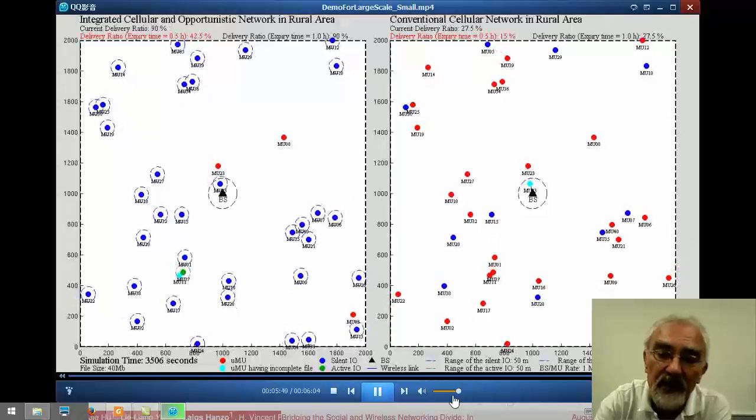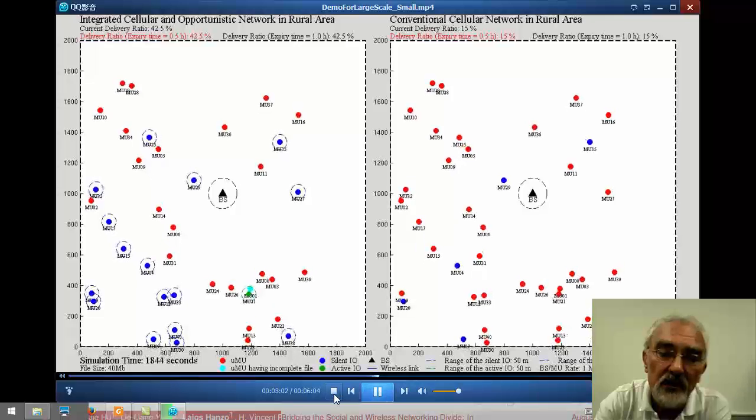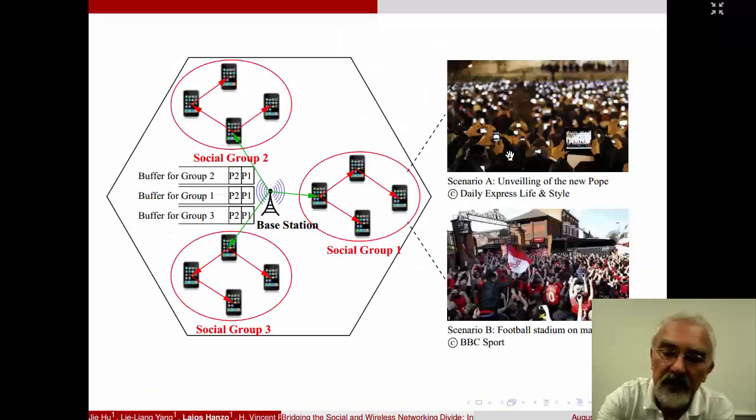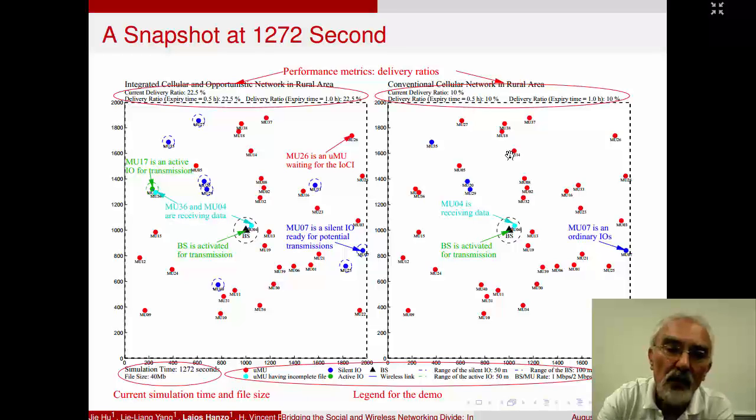So at this stage, I would stop the demo, and I would like to go back and revisit the slides. So just to indicate again, at a low pace, what was going on in the demo. So remember, left-hand side is the integrated cellular and opportunistic network in a rural area. And so the base station has a relatively limited coverage area of 100 meters.